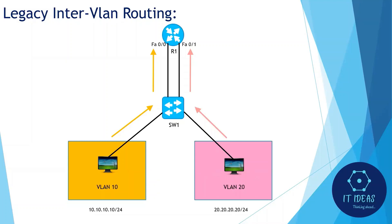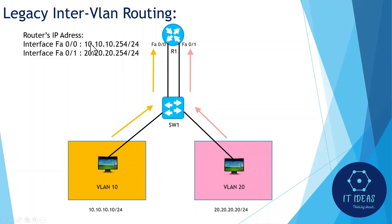In legacy inter-VLAN routing, routers were used to route between VLANs. Each VLAN needs to be connected with one physical interface of the router. Packets received from the router's one interface will be routed and exit from another interface. The router's interface will be configured with an IP address from the specific VLAN subnet. For example, in traditional inter-VLAN routing, connect the router's first physical interface to the switch for VLAN 10, and connect the router's second physical interface to the switch for VLAN 20.